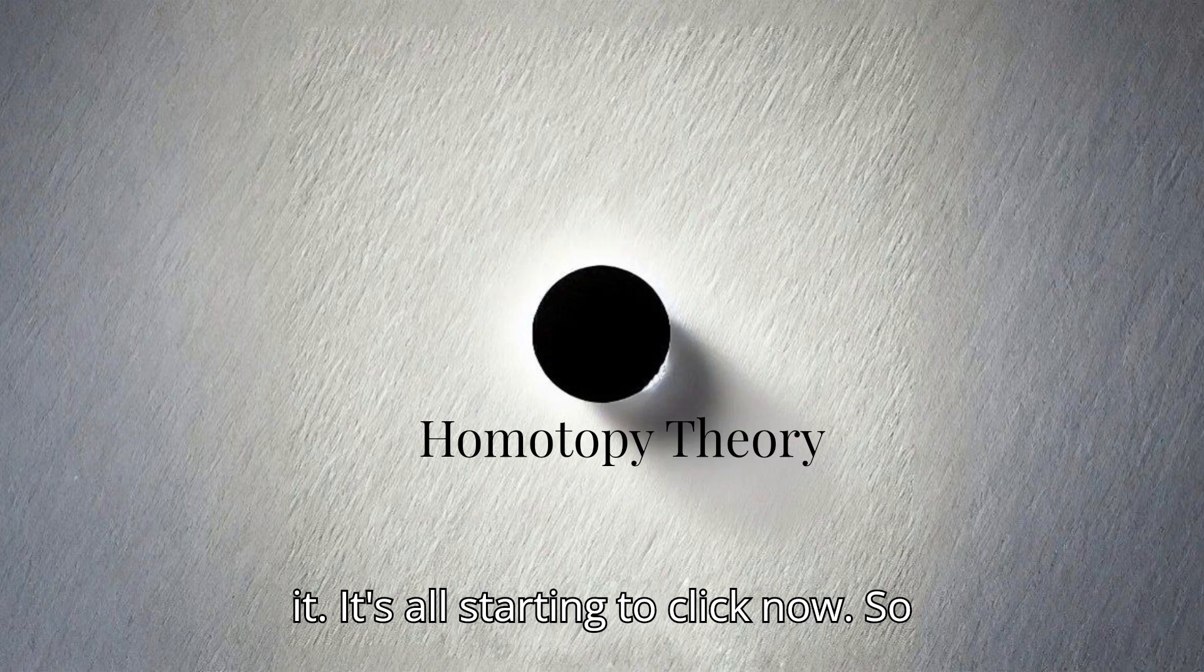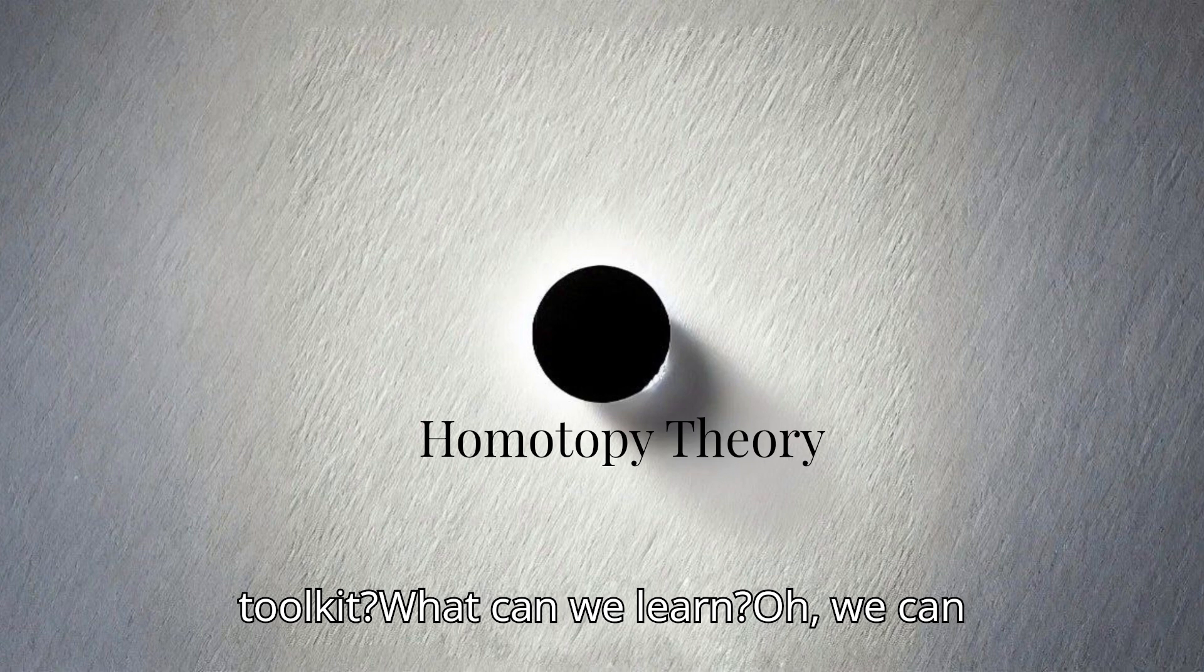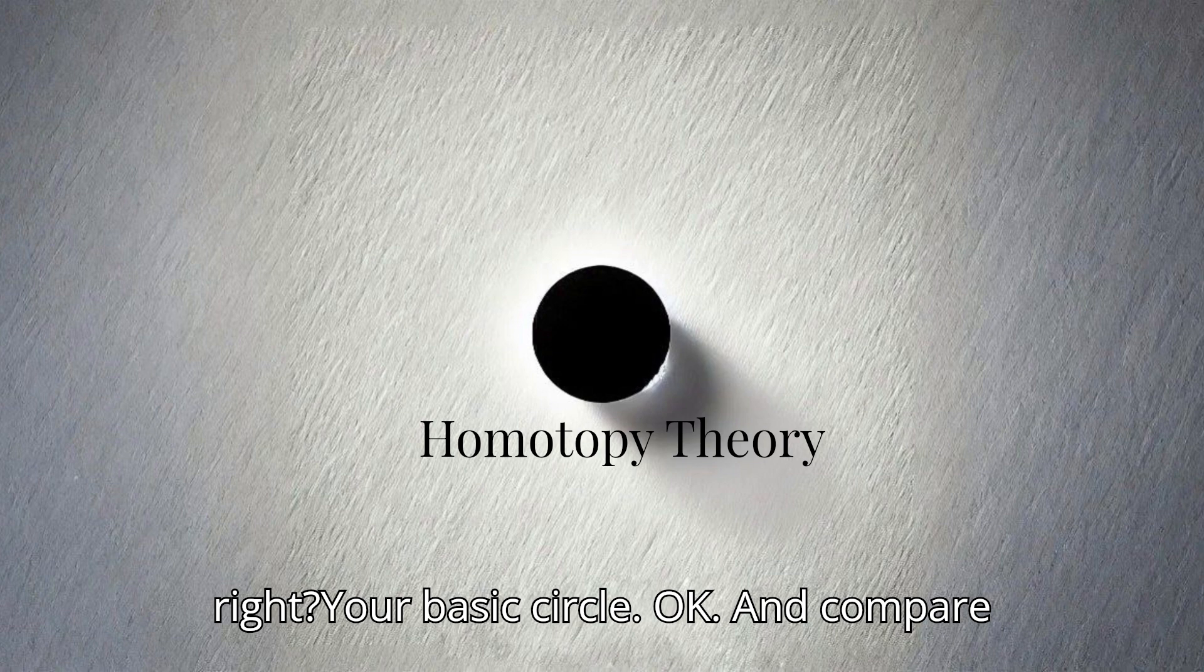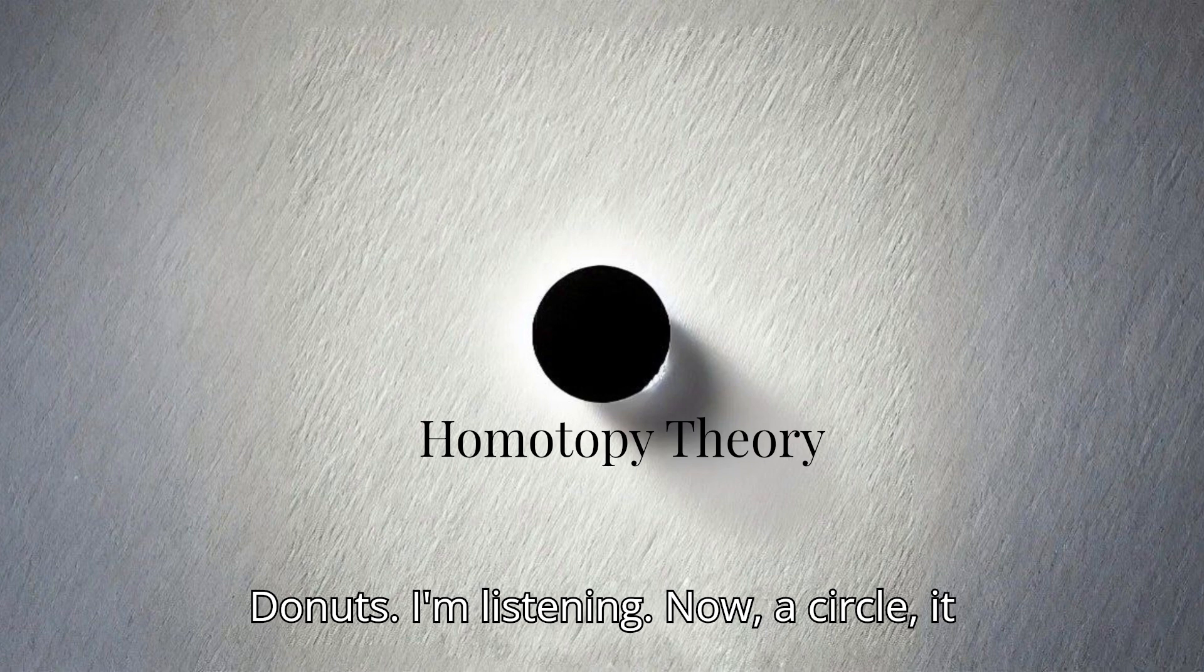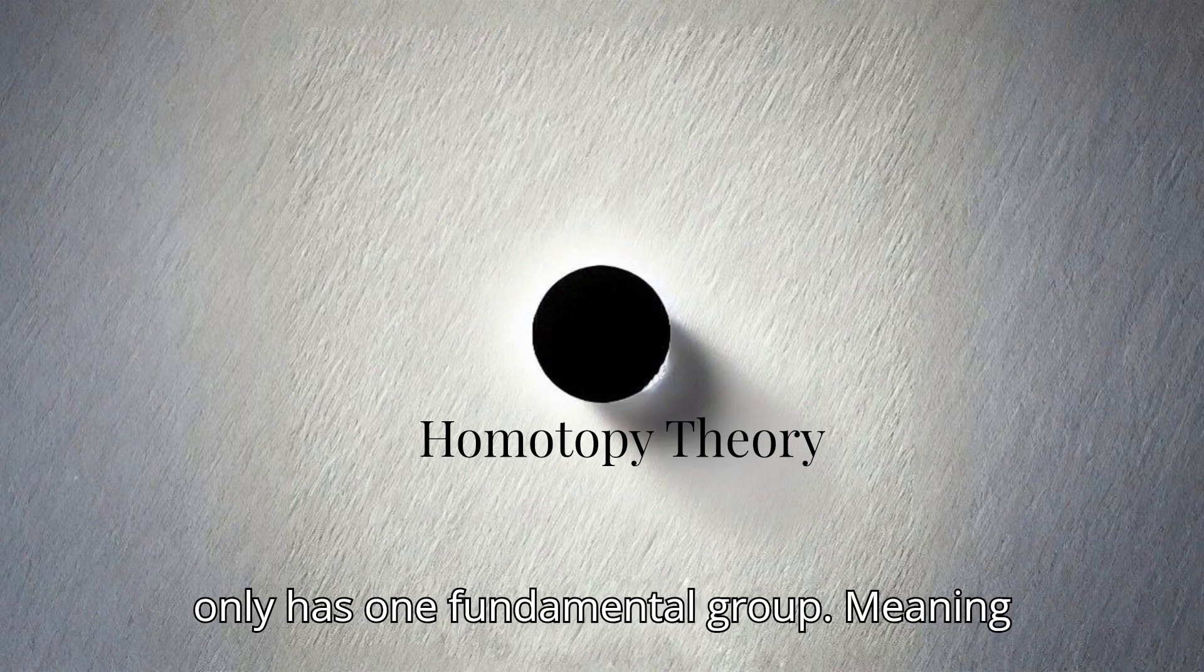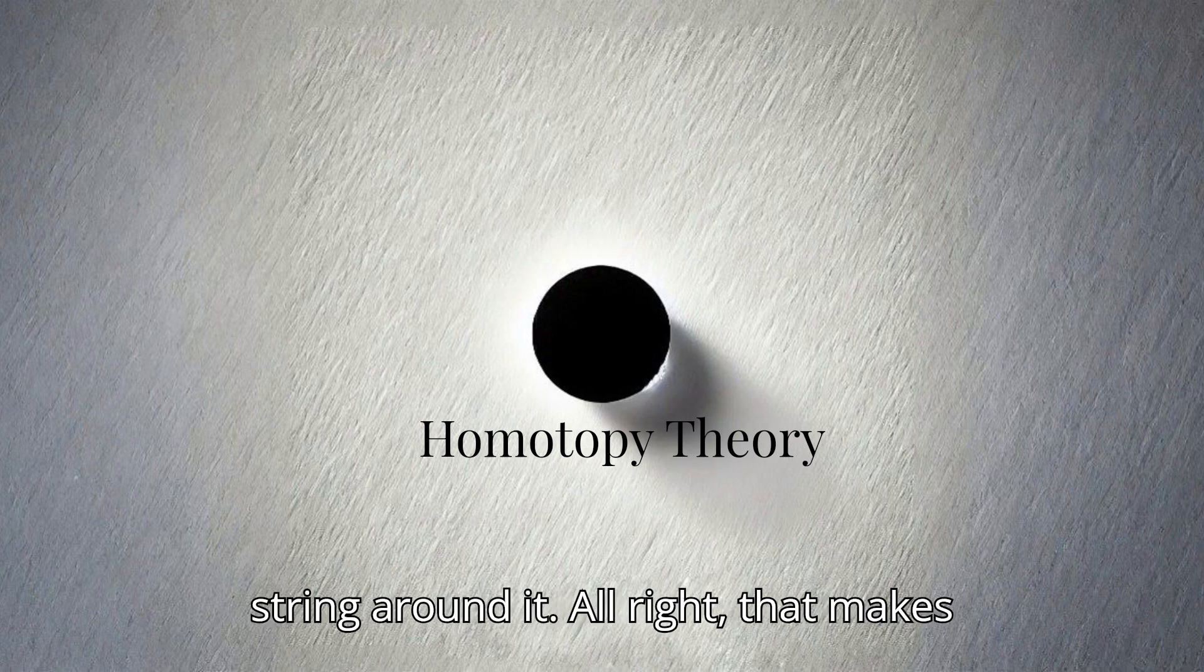So we've got homotopy equivalence to classify shapes based on their morphing abilities. Right. And then we've got homotopy groups to delve into their deeper structure, their secret looping codes. You got it. It's like we're building this toolkit to understand the language of shapes. I love it. It's all starting to click now. So tell me, what happens when we apply this toolkit? What can we learn? Oh, we can learn a lot. For example, take a circle, right? Your basic circle. And compare it to a torus, which is like a donut.